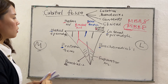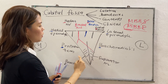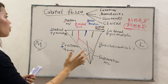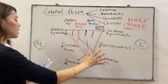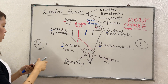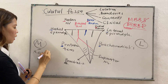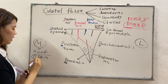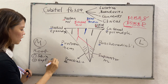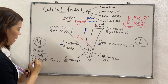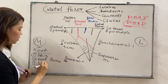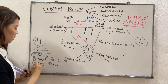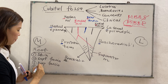We already have the boundaries, the floor, and the contents — one more thing is missing, and that is the roof. The roof covers the entire cubital fossa and consists of: number one, the skin; number two, the superficial fascia; number three, the deep fascia; and number four, the bicipital aponeurosis.